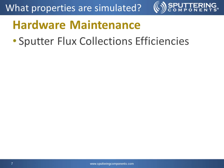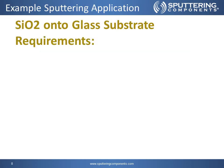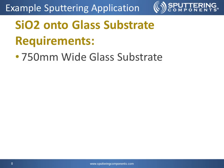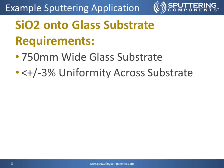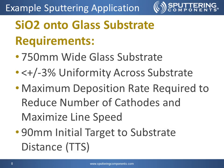For hardware maintenance, we look at the sputter flux collection efficiencies to determine the amount of material that lands on the substrate compared to the surrounding coater surfaces. For our sputter application example, we're going to start off with SiO2 on a 750mm wide glass substrate, with a less than plus or minus 3% uniformity across the substrate, and a maximum deposition rate required to reduce the number of cathodes and maximize the line speed, running at a fairly high power density. And then also a 90mm target to substrate distance, otherwise known as the TTS.